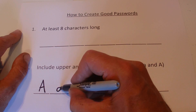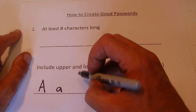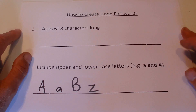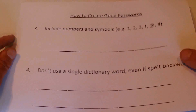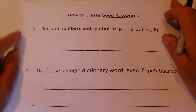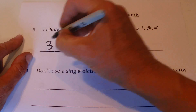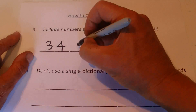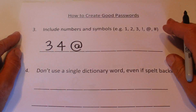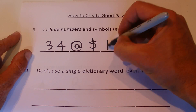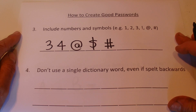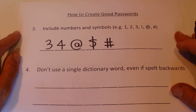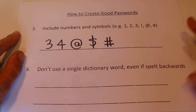You might have a capital A and a little A in your password, or a capital B and a little Z, to mix them up a bit. Apart from upper and lowercase letters, it's also good to include numbers and symbols — you might include 3 and 4 in your password, and symbols like the at symbol, the dollar sign, or the hash.